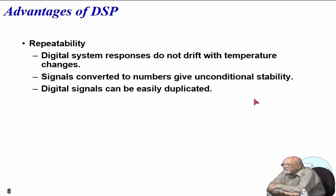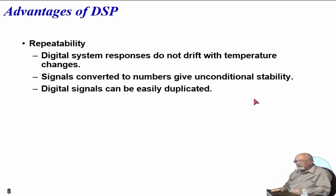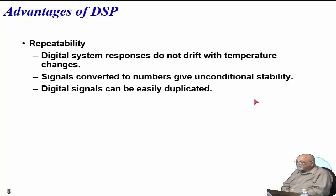The big advantage of DSP is you get repeatability — things can be easily reproduced. It won't drift with temperature. Inverted numbers give essentially unconditional stability. And digital signals can easily be duplicated from one to the other.